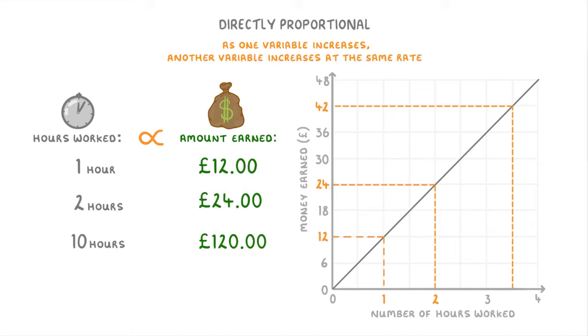So to summarize, the main takeaway of this video is that if two variables are directly proportional to each other, then they'll both increase or decrease proportionally. So if one doubles, the other one doubles, or if one halves, the other one halves.